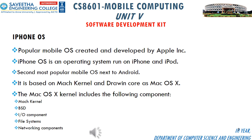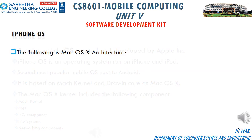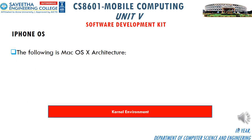The Mac OSX kernel includes the following components: Mac kernel, BSD, I/O component, file systems, and networking components. The kernel provides many enhancements for OSX including preemption, memory protection, enhanced performance, improved networking facilities, support for both Macintosh and non-Macintosh file systems, object-oriented APIs, and more. Two of these features — preemption and memory protection — lead to a more robust environment.